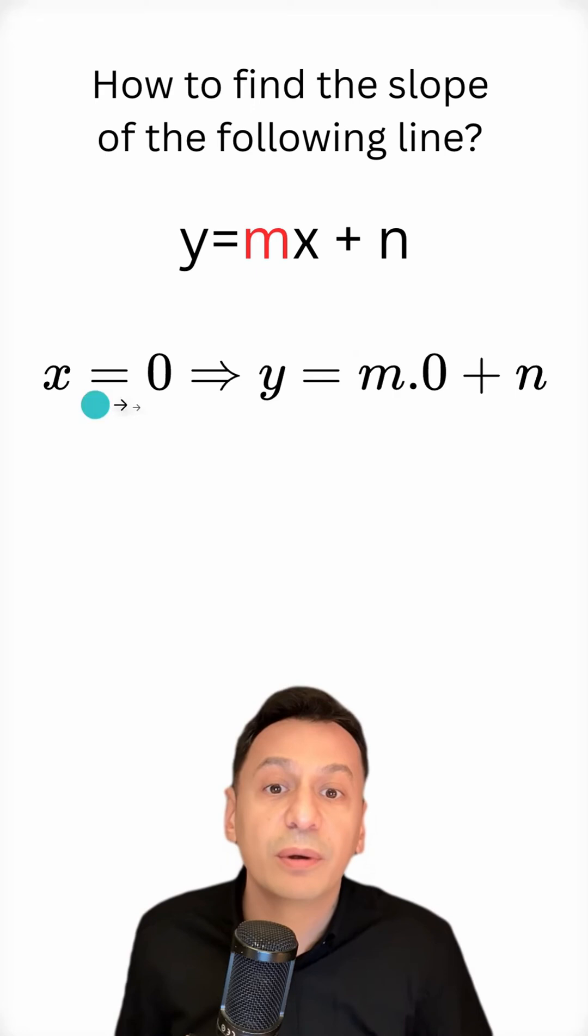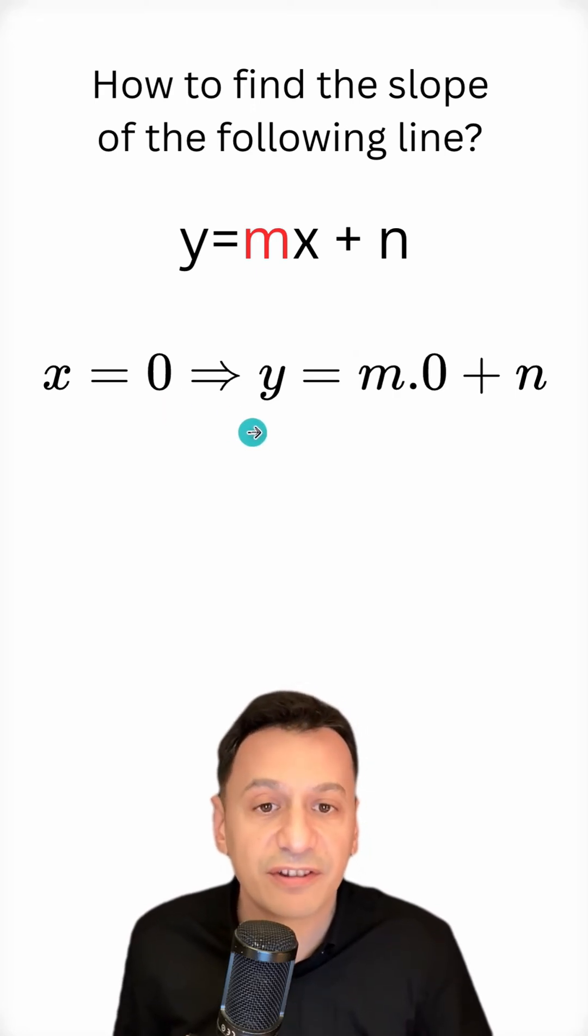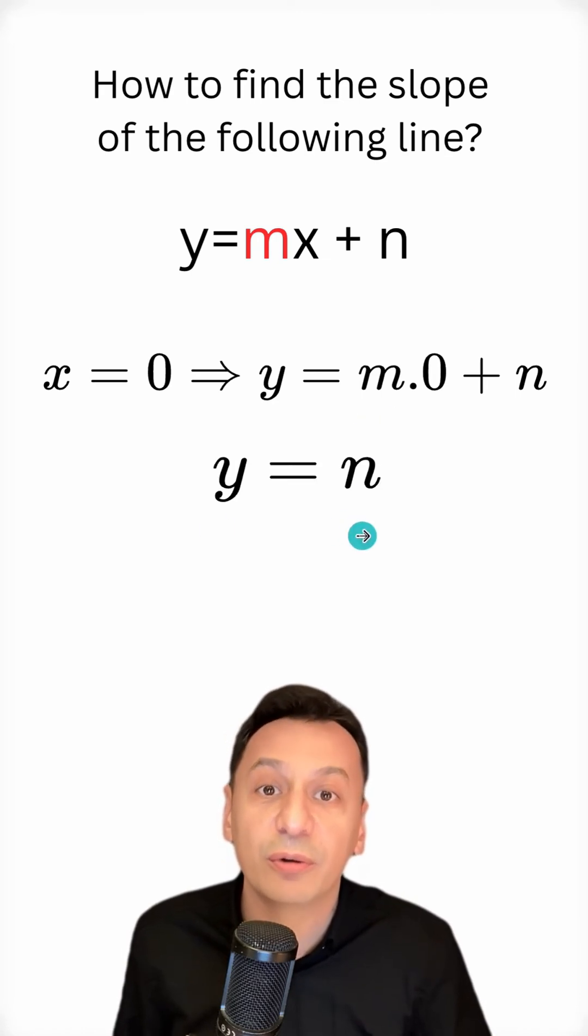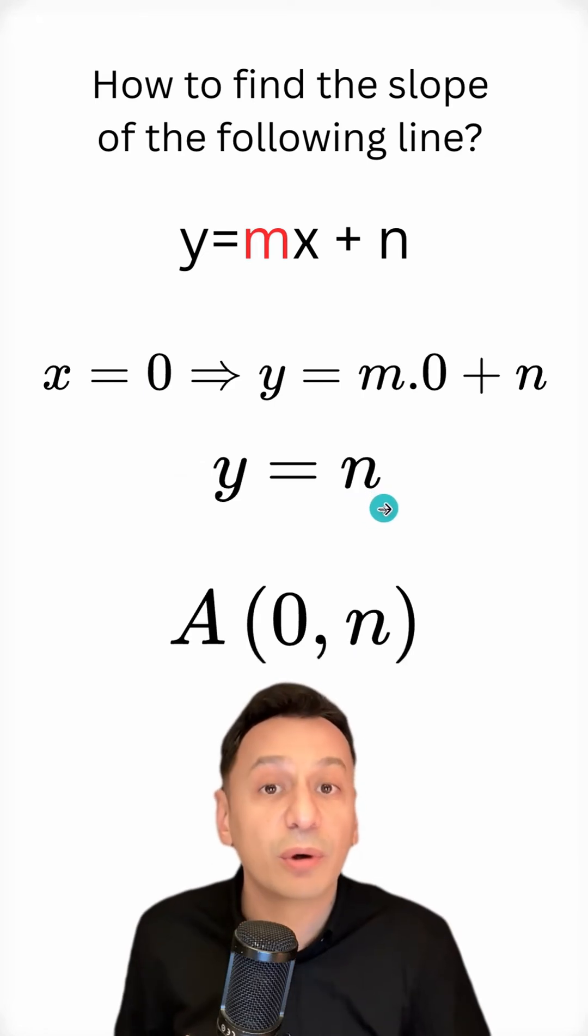I set x equal to 0 and look at what y will be when x is 0. I substitute 0 for x. Therefore, this part will be 0 and y will be equal to n. Now, my abscissa is 0 and my ordinate is n, so I've already found one point.